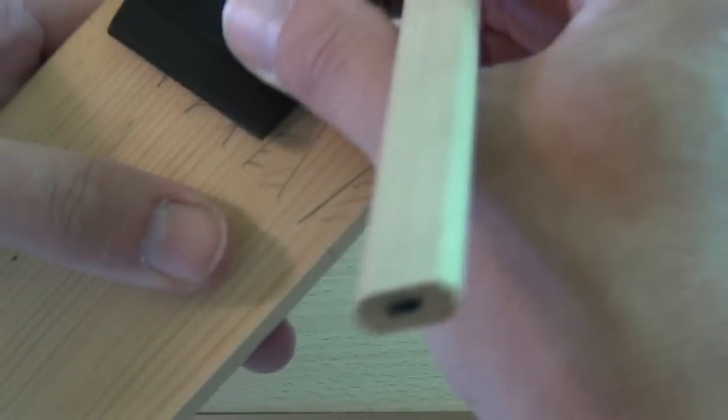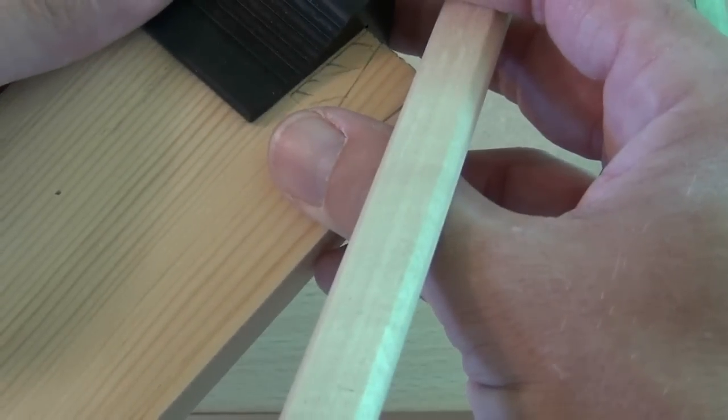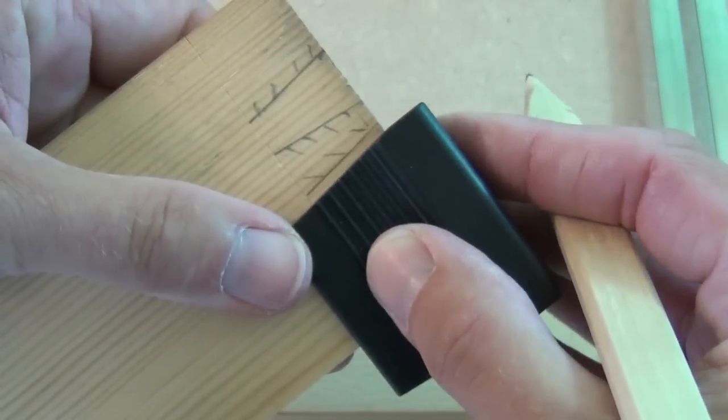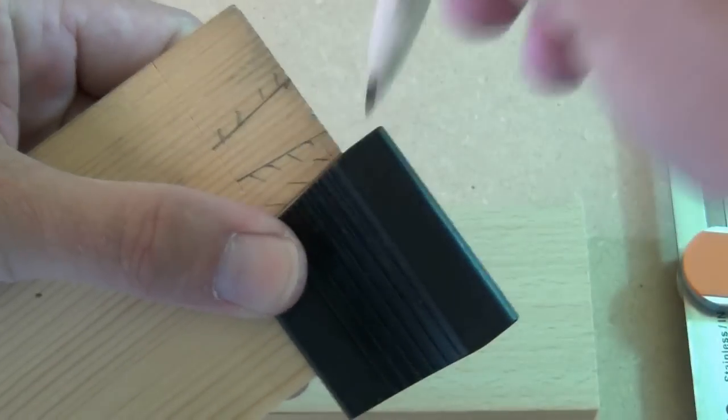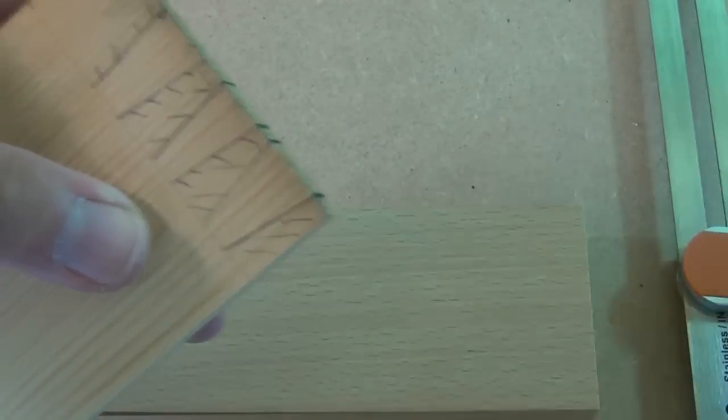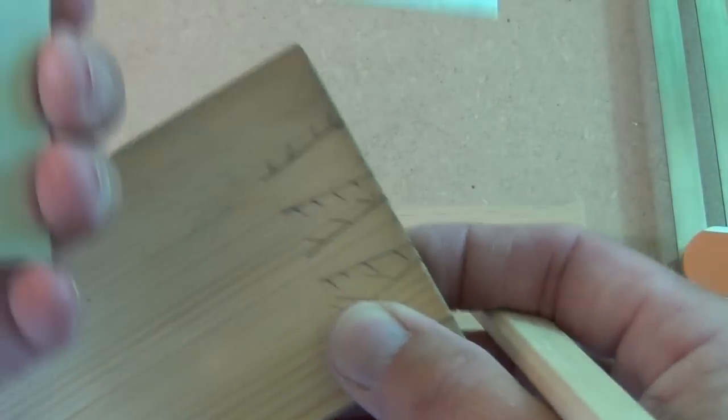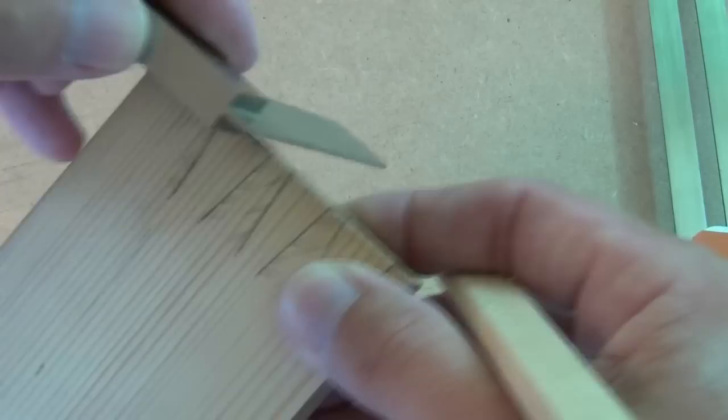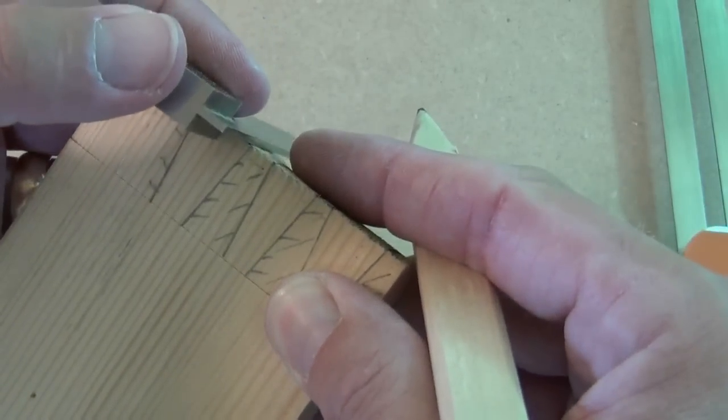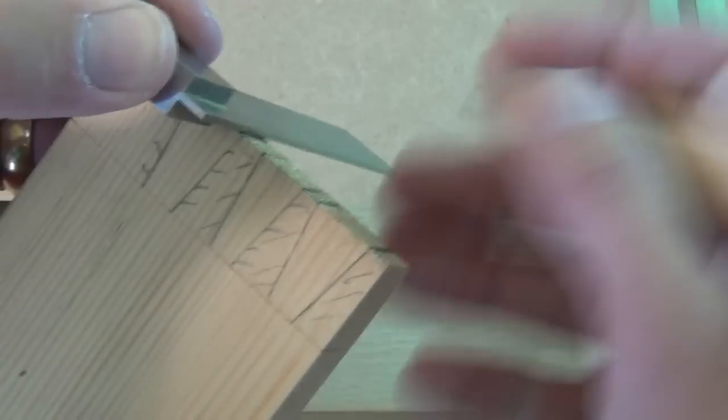And that's the same with the Veritas as well. If you've used the bevel gauge, you should use a square and square those marks around. You'll find that a lot easier if you clamp your work in a vise.